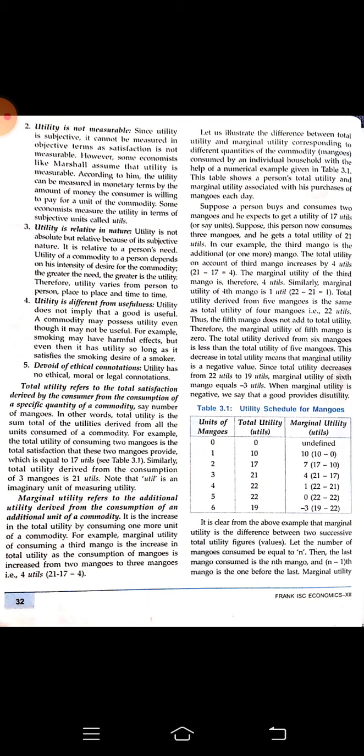Next we have total utility. In the diagram — Table 3.1, page number 32 — a tabular representation of the utility schedule for mangoes is given. You can see the total units of mangoes consumed: 0, 1, 2, 3, 4, 5, and 6. Total utility is measured — as the person consumes 6 mangoes, the total utility is 19. You can see total utility first increasing and then decreasing, similar to the marginal utility.